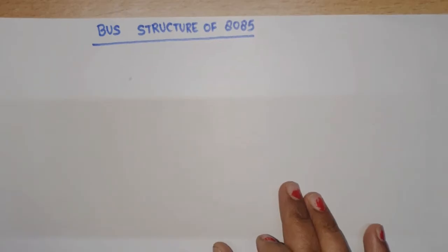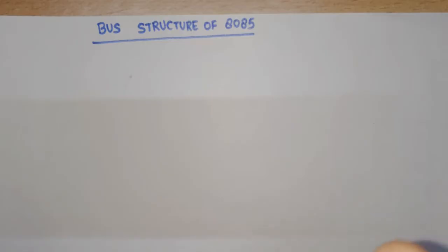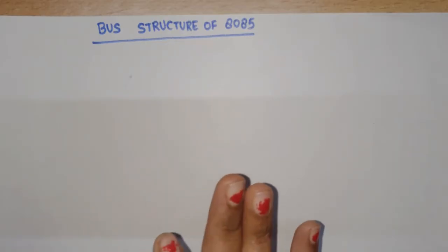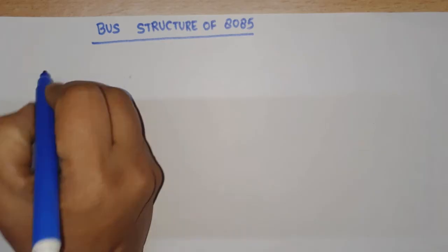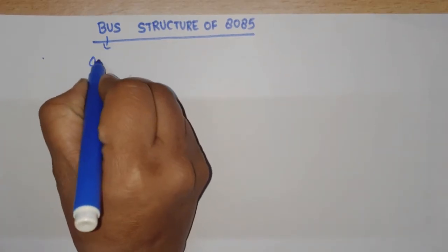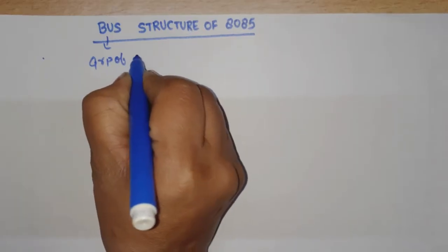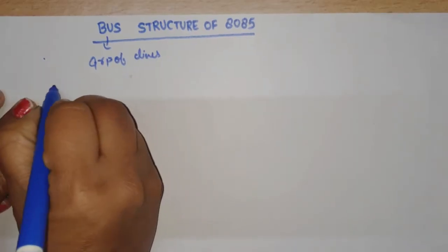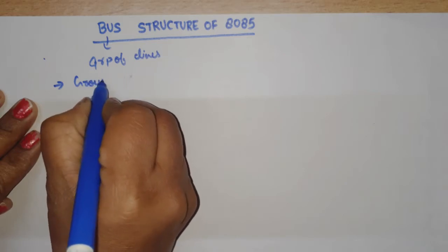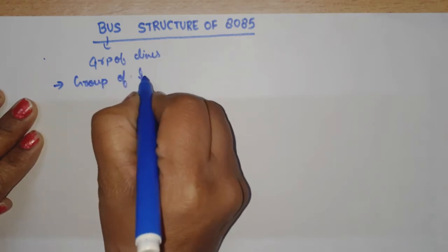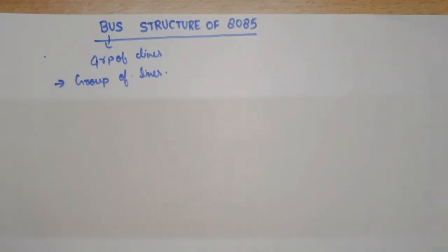Hello everyone. In this video, I will discuss the bus structure of 8085. Before discussing bus structure, what is a bus? A bus is basically a group of lines which carry data between memory to microprocessor, microprocessor to memory, and microprocessor to I/O devices as per requirement.